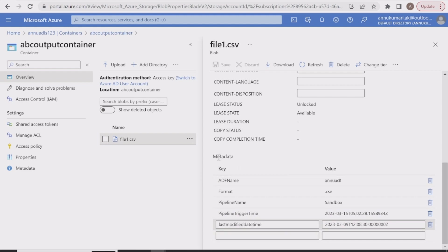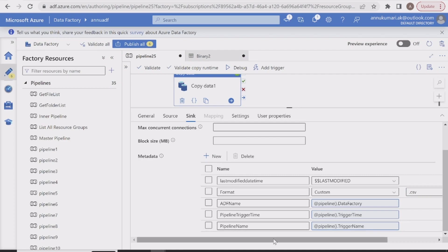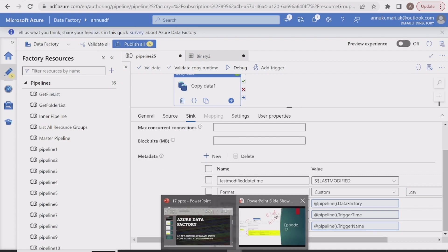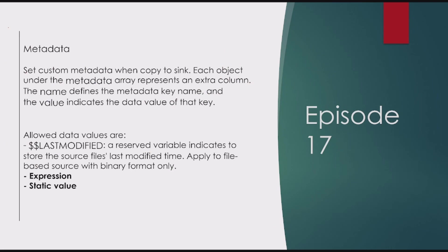We can add all these properties to the metadata using custom metadata fields in copy activity sink settings. To summarize: we can set custom metadata when copying to a sink when the sink is blob storage or ADLS. Each object under the metadata array represents an extra key-value pair in the metadata field. The name defines the metadata key name and the value indicates the data value of that key.